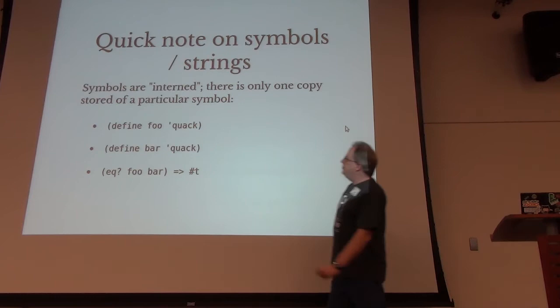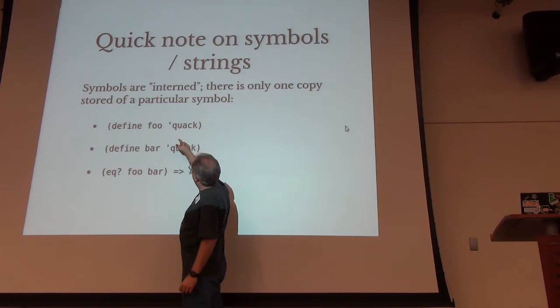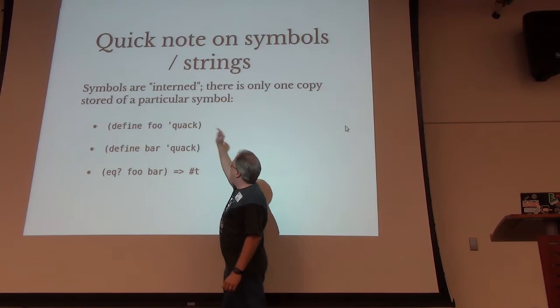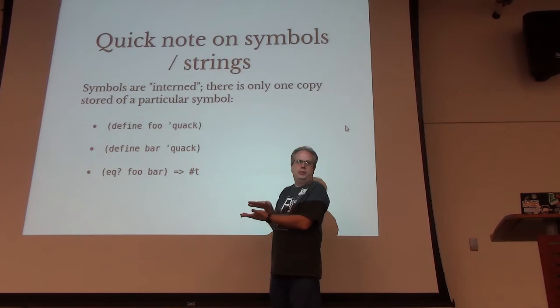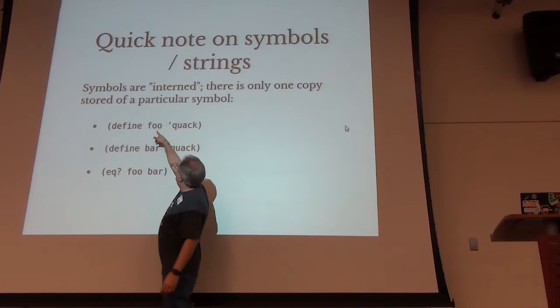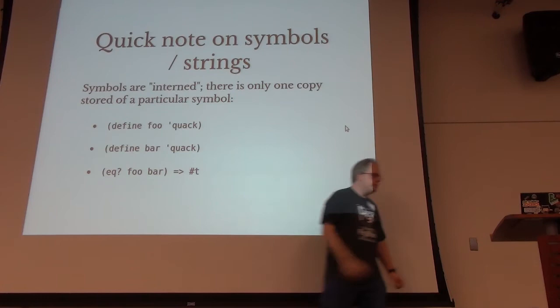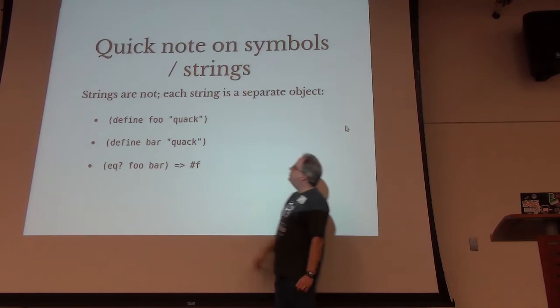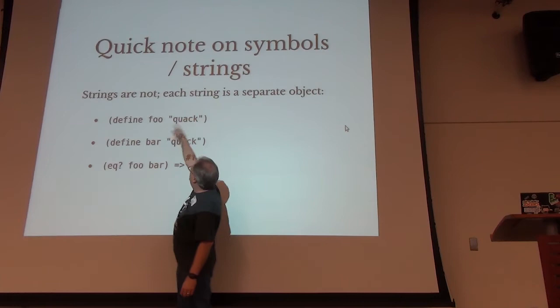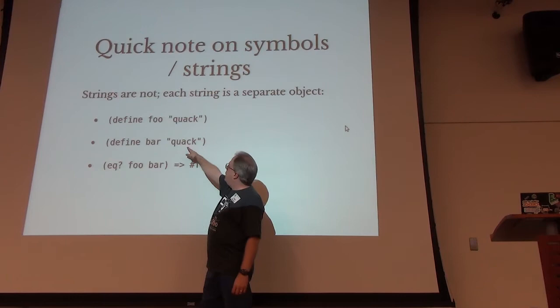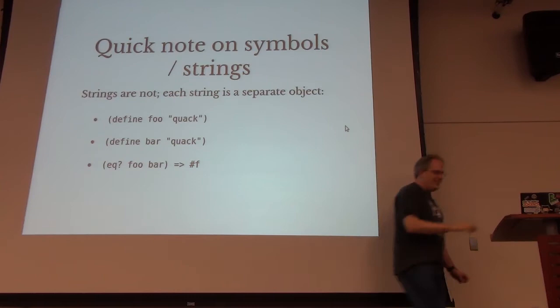Symbols become interned — every symbol becomes part of a symbol table. Think of it like a hash table where every symbol points to the same piece of memory. So if I define foo as the symbol 'quack' and bar as 'quack', they're both pointing at the same piece of memory, so eq? returns true. Strings do not do that — strings are different objects whenever they're created. So foo pointing to the string 'quack' and bar pointing to 'quack' are different objects entirely, so they're not equal.